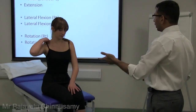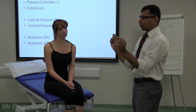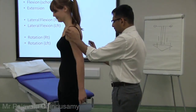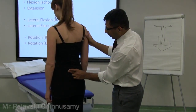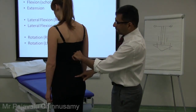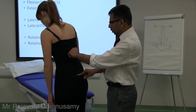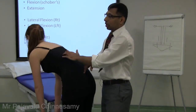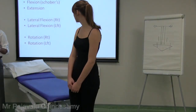When they do flexion, you can do the Schober's test - measuring from the posterior spine, 5 centimeters below and 10 centimeters above. In the exam we are not supposed to mark it, so just tell them to bend forward as much as possible and comment: I can see a significant increase in length. I could measure by marking but I don't want to mark. So look, feel, and move is finished.